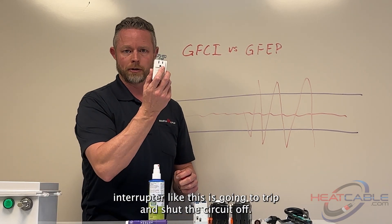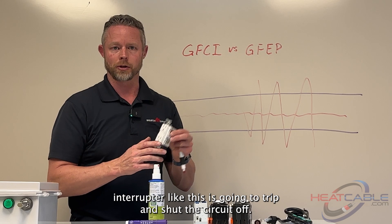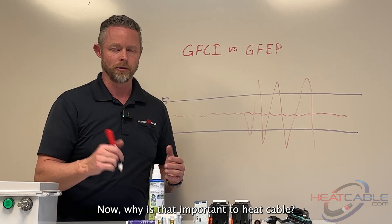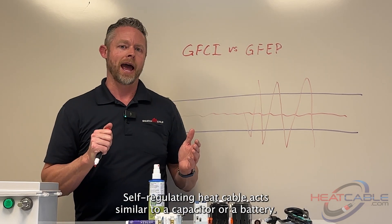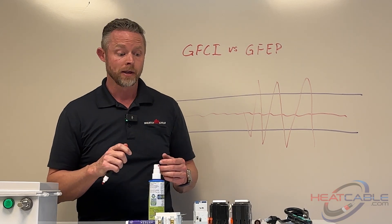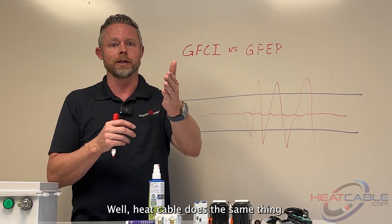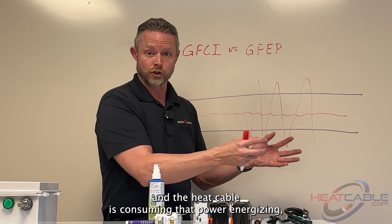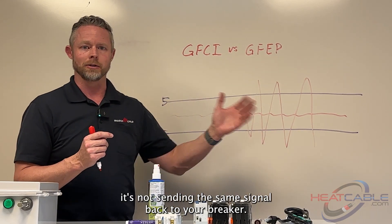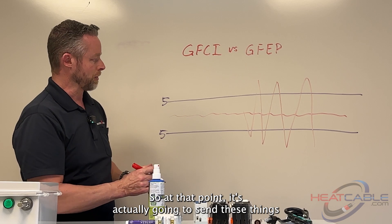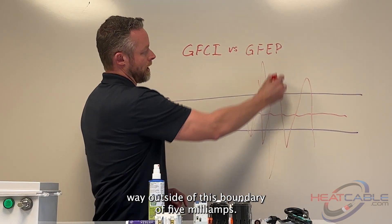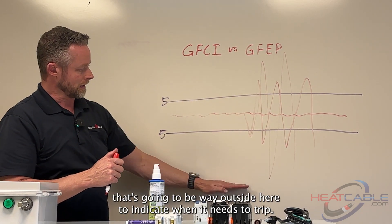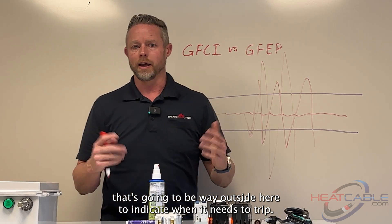At that point, a circuit interrupter is going to trip and shut the circuit off, protecting the child or the person pulling power outside that circuit. Why is that important to heat cable? Self-regulating heat cable acts similar to a capacitor or a battery. A battery consumes energy, has energy, retains it. Heat cable does the same thing. If you've got power going into the system and the heat cable is consuming that power and energizing, it's not sending the same signal back to your breaker. At that point it's actually going to send things way outside of this boundary of five milliamps. You need a larger boundary way outside here to indicate when it needs to trip.